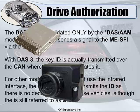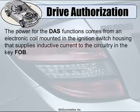There was also an original DOS version that did not use a two-way communication rolling code system. Right there is a picture of a general EIS with DOS 3. The power for the DOS functions comes from an electronic coil mounted in the ignition switch housing and is supplied by inductive current to the circuitry in the key fob.